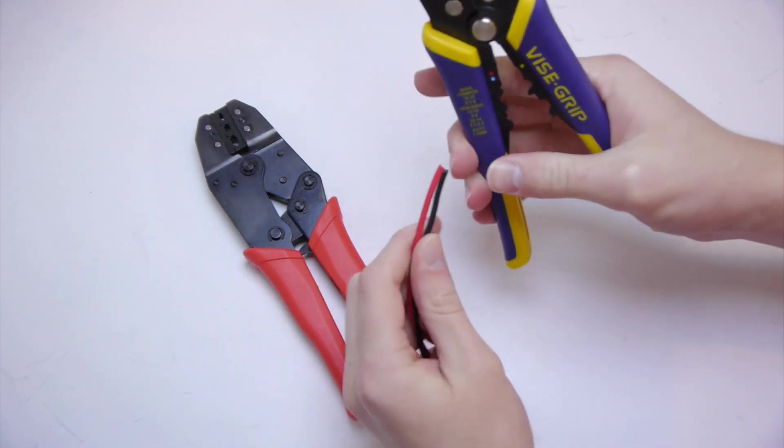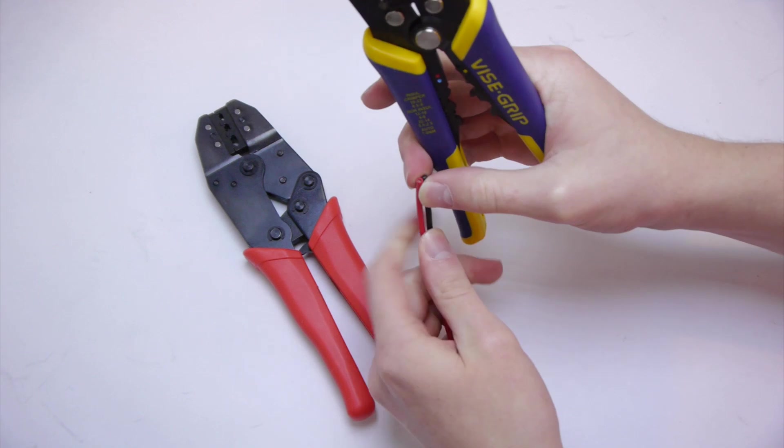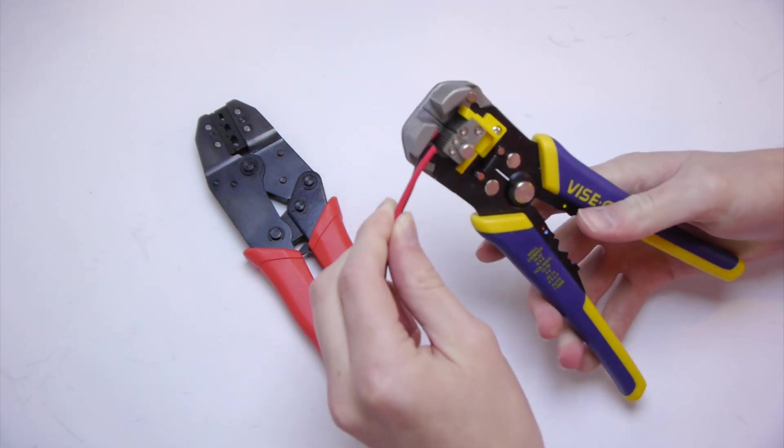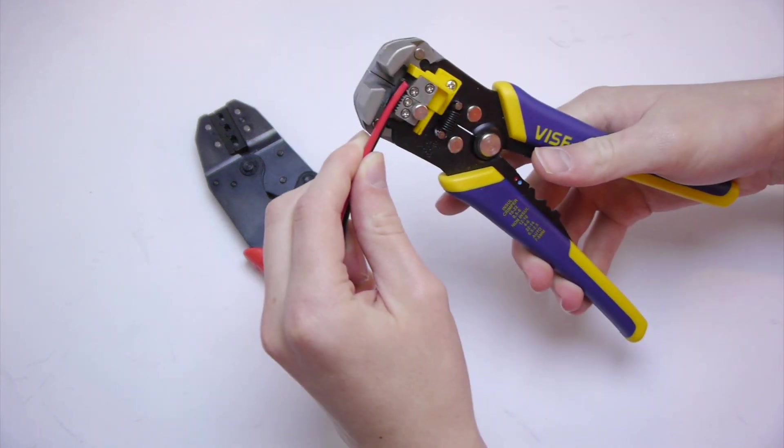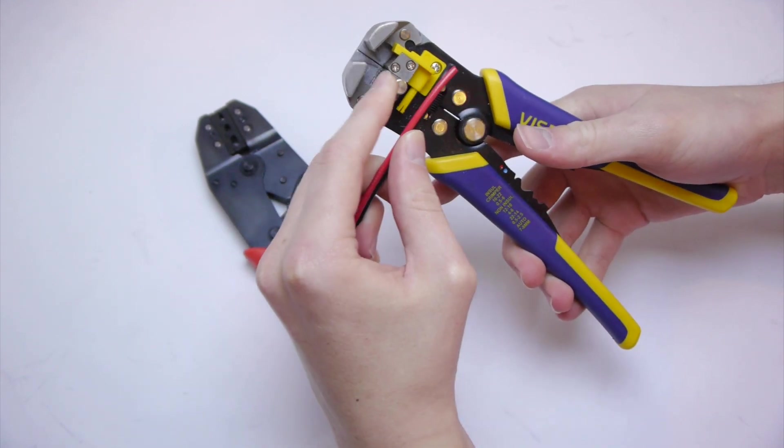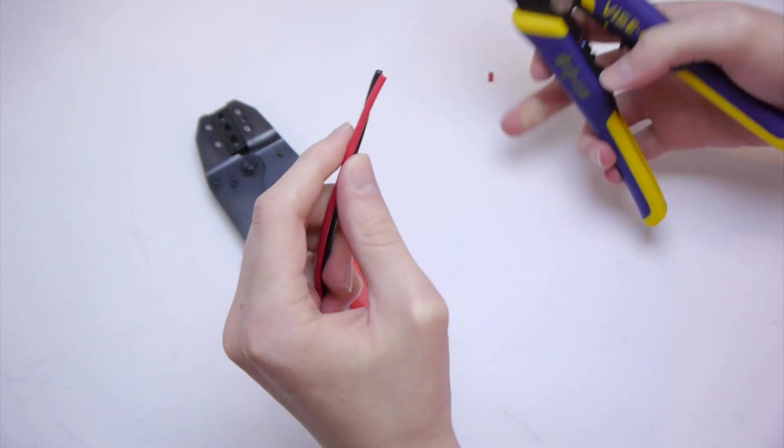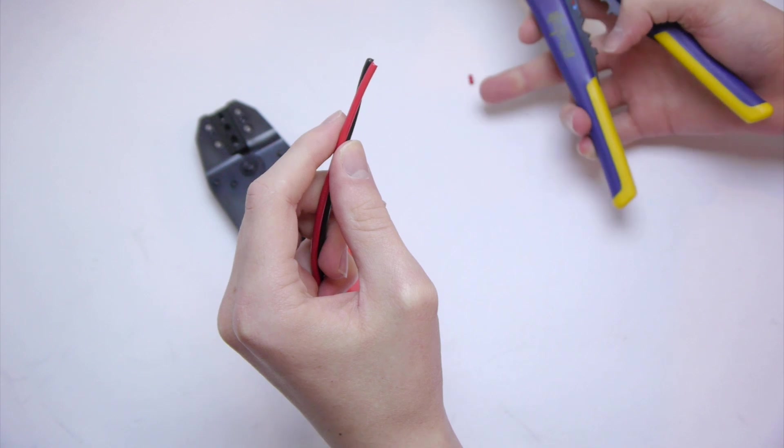Then you take your wires, hold them together very closely, stick them in until both of them hit the piece here. Make sure that there's no extra pieces inside here. You can see this was inside and I dropped it out.